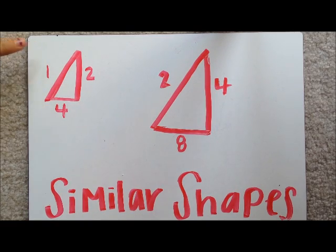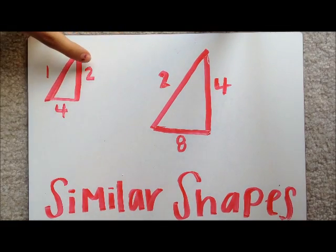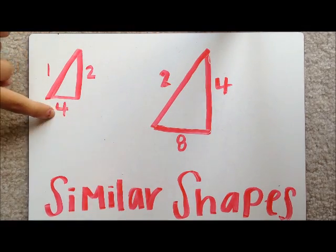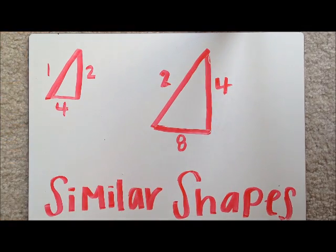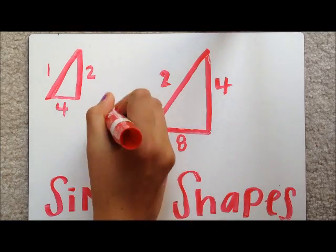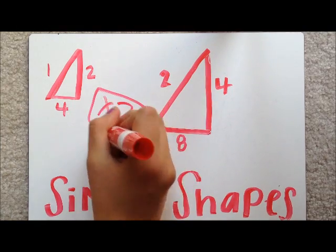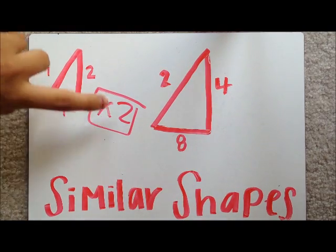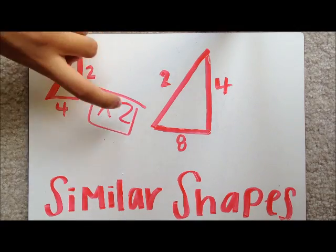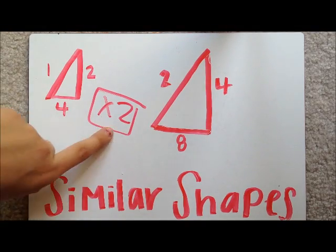Here's an example. You see that 1 goes to 2, 2 goes to 4, and 4 goes to 8. Then you know that the Scale Factor is times by 2. Because 1 times by 2 is 2, 2 times by 2 is 4, and 4 times by 2 is 8.